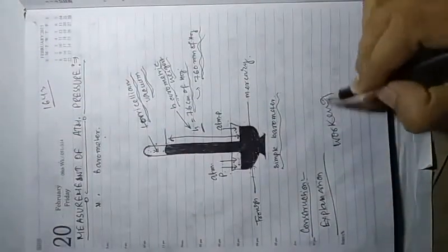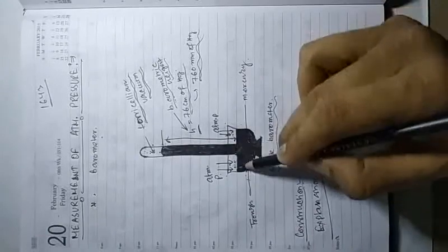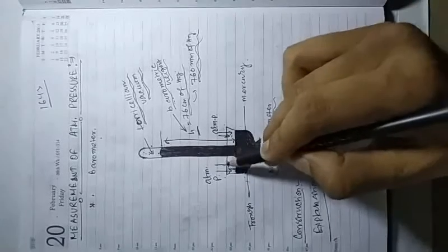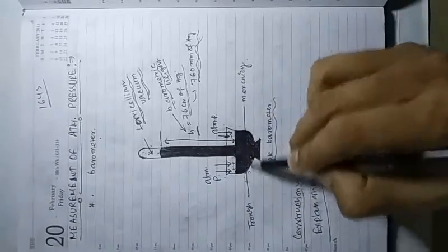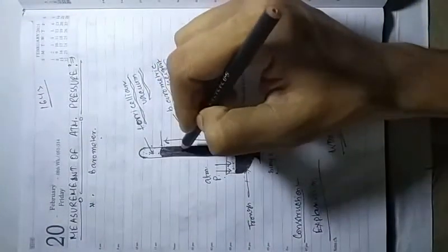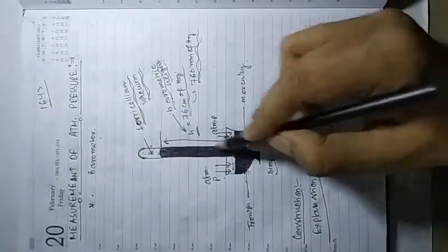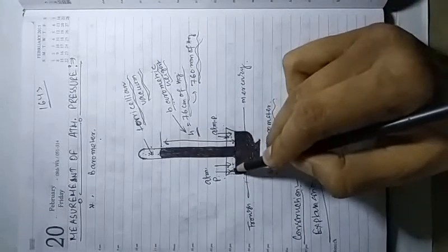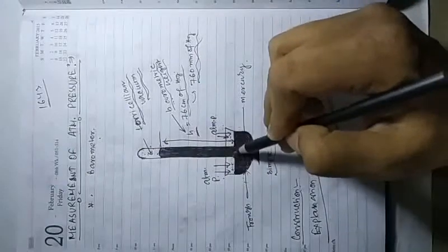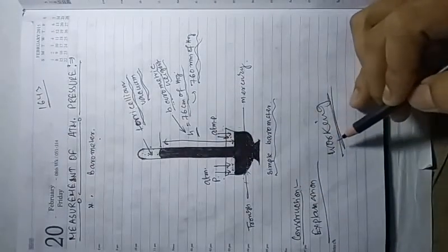Working of the barometer: if atmospheric pressure increases, the balance breaks — more mercury is pushed from the trough into the tube, so the mercury level in the tube rises. If atmospheric pressure decreases, the weight pressure of mercury exceeds the outer pressure, so the mercury level in the trough increases. By this way we can calculate atmospheric pressure.